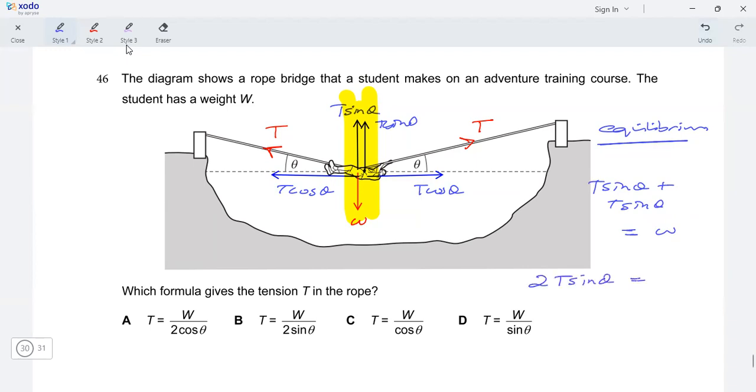2T sine theta is equal to W. Rearrange. T is equal to W divided by 2 sine theta and that's it. That matches option number B and that's our answer.